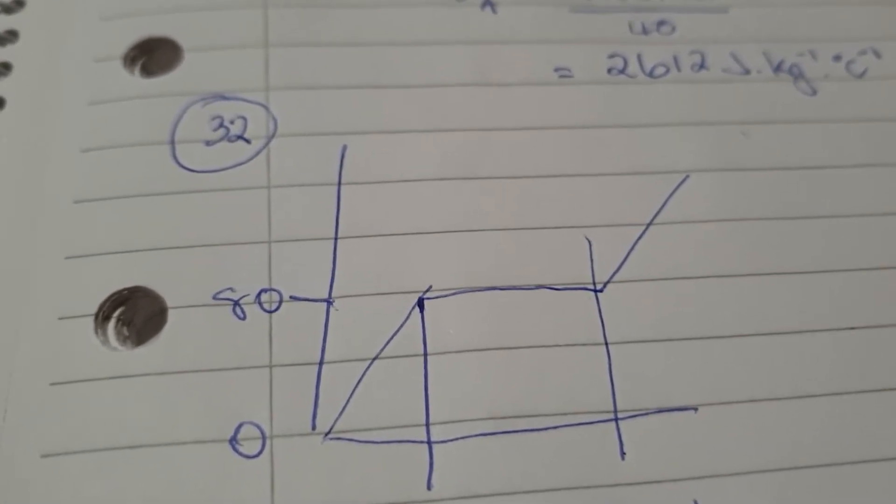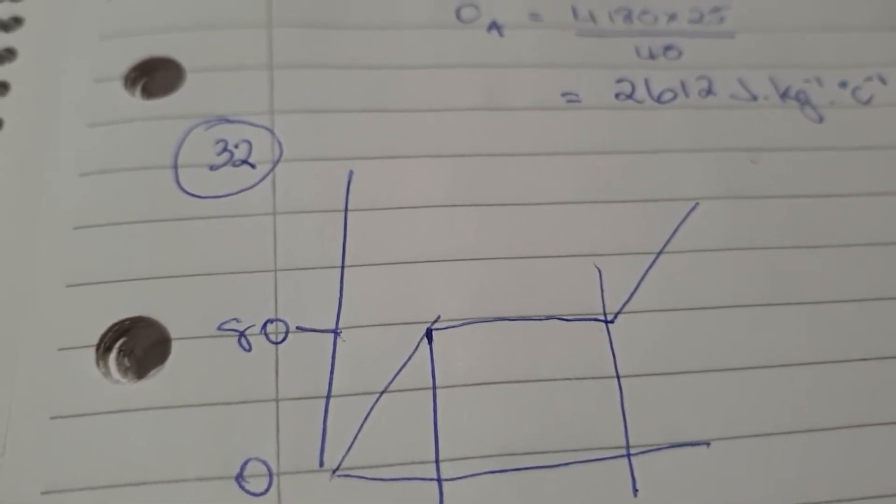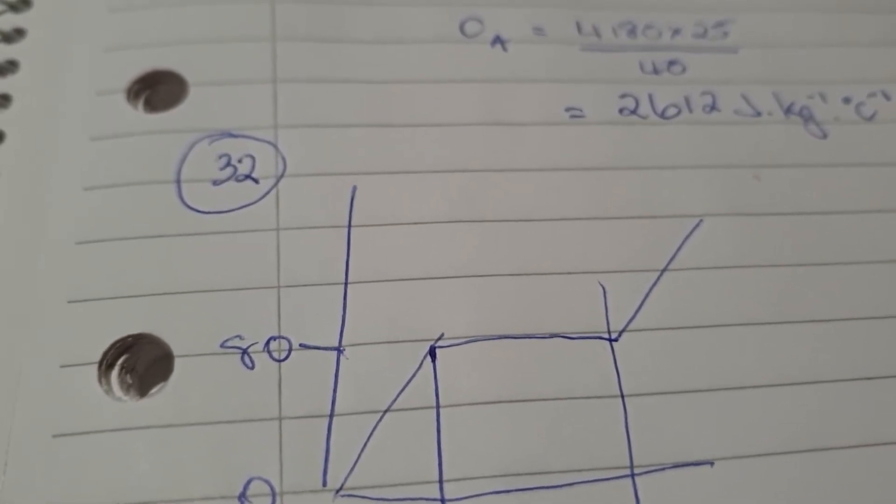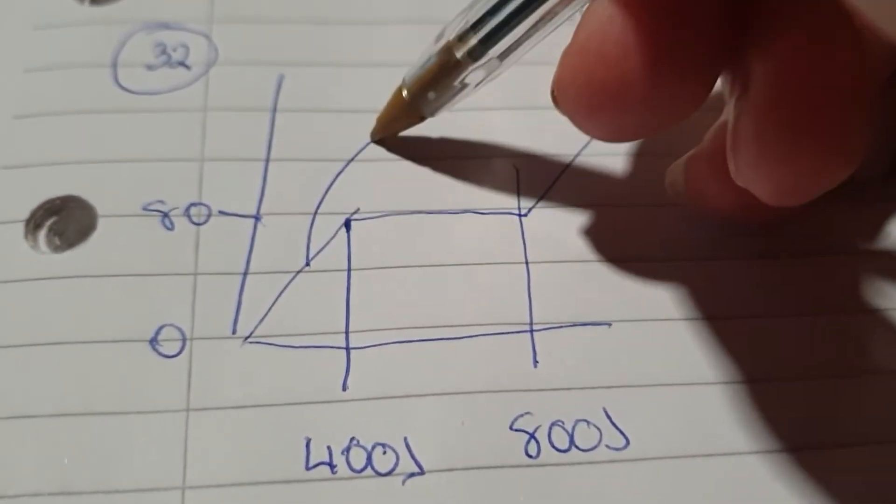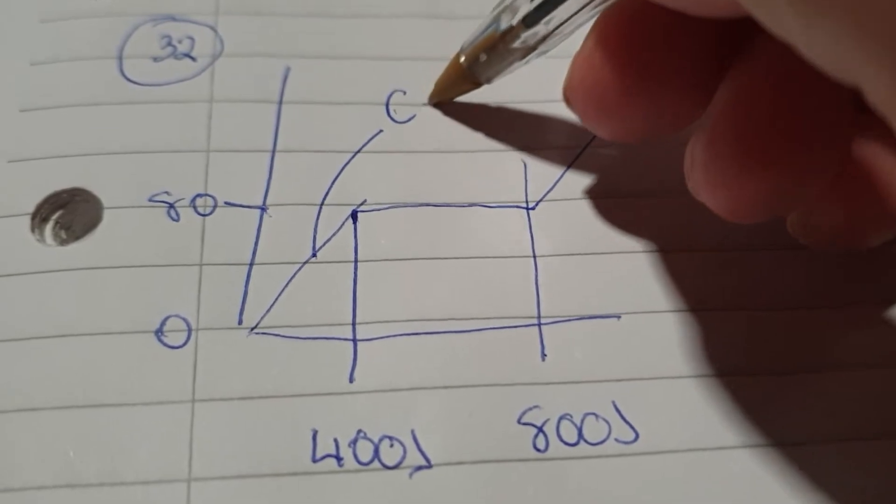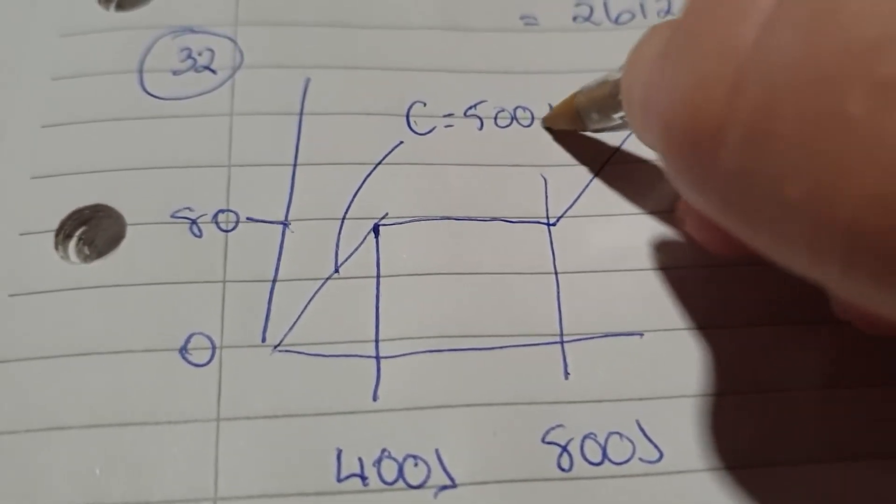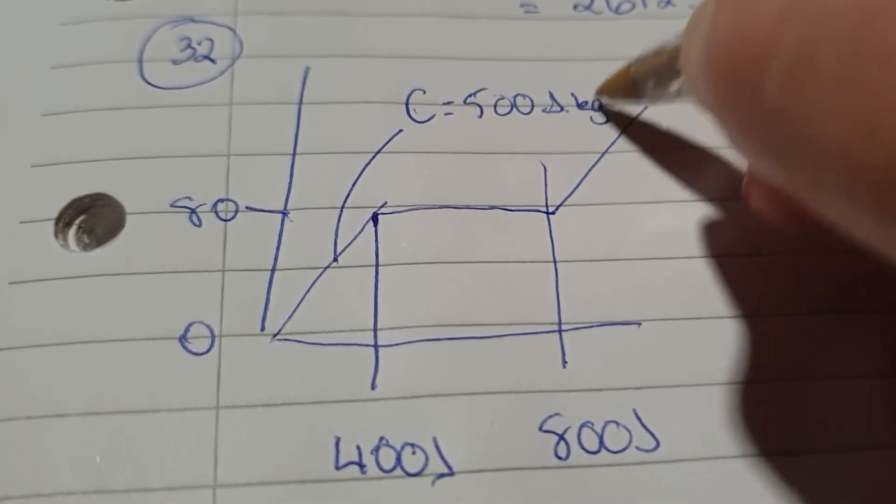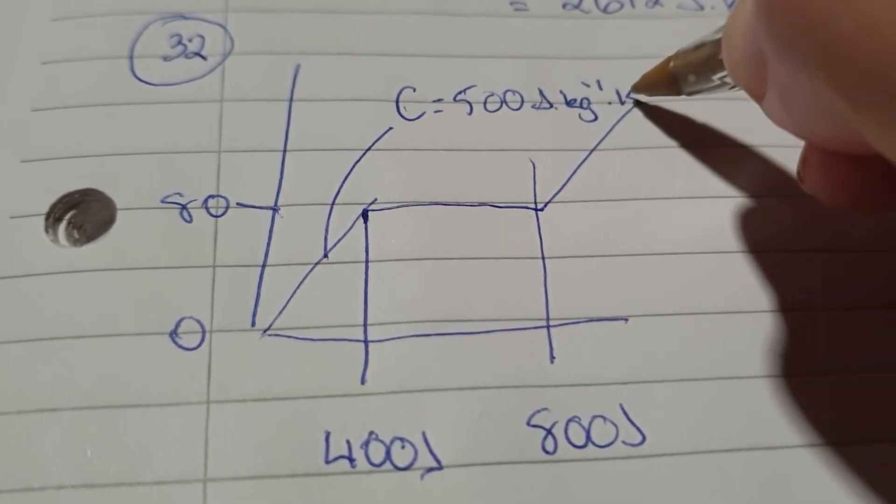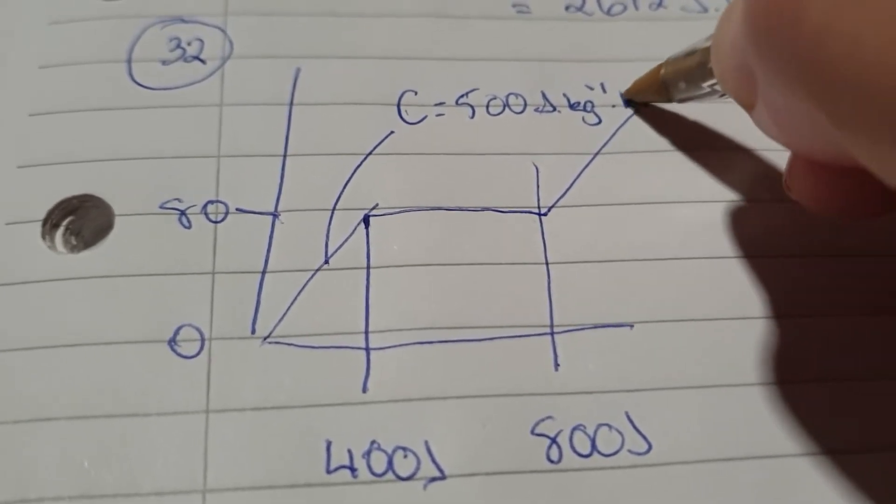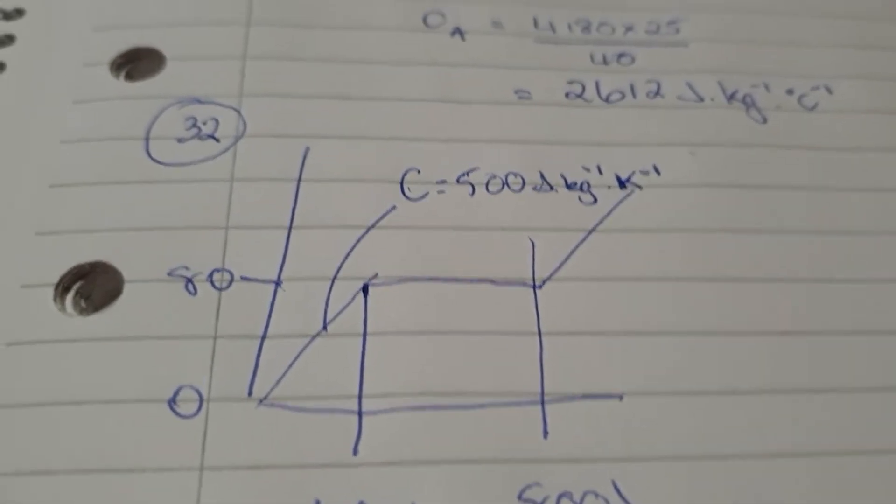It's in solid form at 0. The heat's added to it. Specific heat capacity of the solid is 500. So, that's only in that phase there. So, C equals 500 joules per kilogram per Kelvin. I said degrees Kelvin before. That's wrong. It's just Kelvin. They're not degrees. Alright.